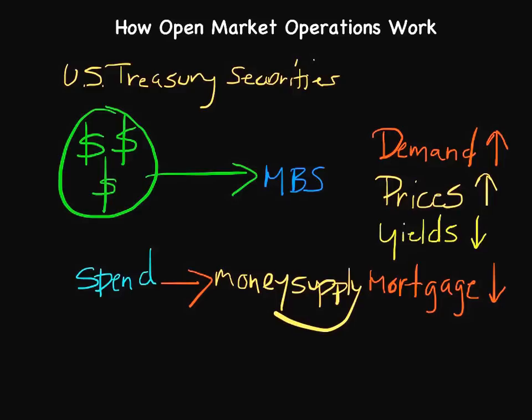By doing so, we are essentially taking the existing supply of money and actually increasing it — expanding the supply of money, thus making more money essentially available. The reason we do this is because if more money is available in circulation, then people are more likely to have access to those funds, spend them, reinvest them into the economy, and hopefully jumpstart the economy.